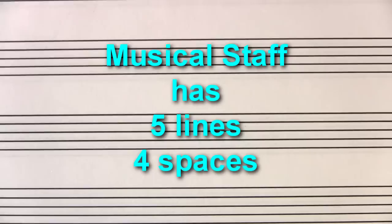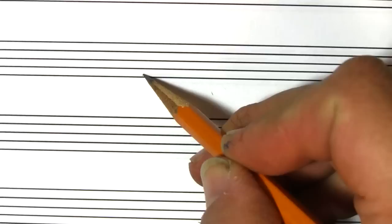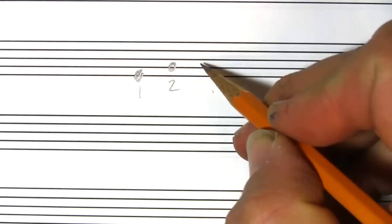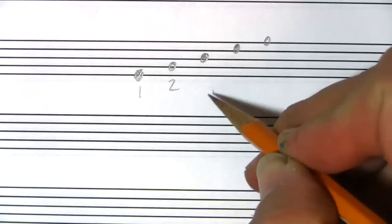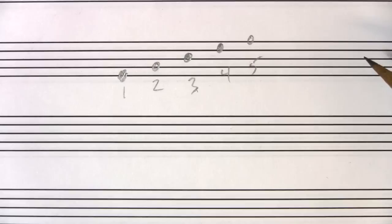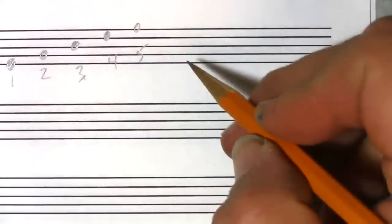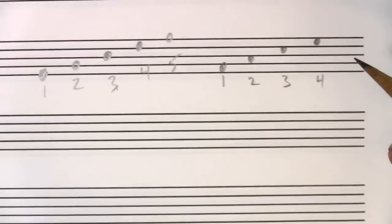The musical staff is the five lines and four spaces. The lines are right here — that's the first line, second line, third line, fourth line, and the fifth line. In between the lines we have what are called the spaces: the first space, second space, third space, and fourth space.